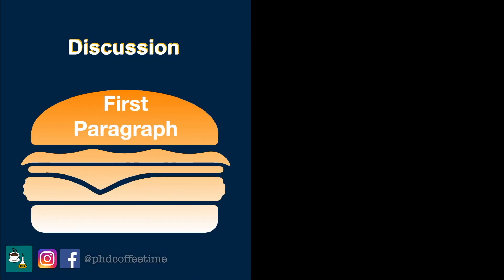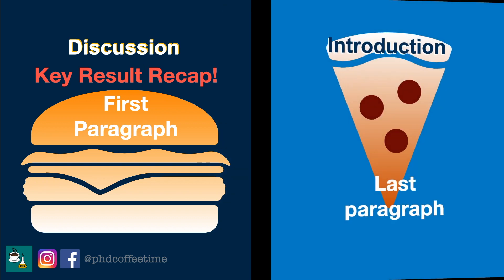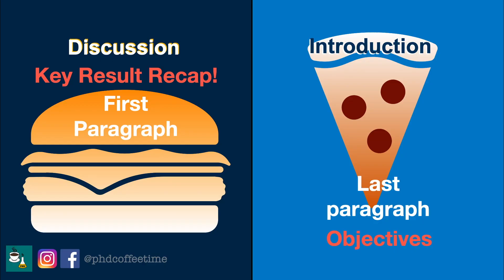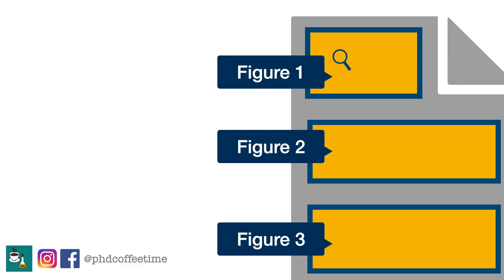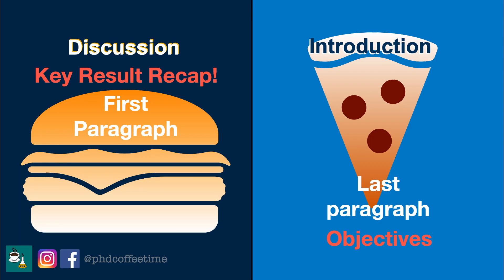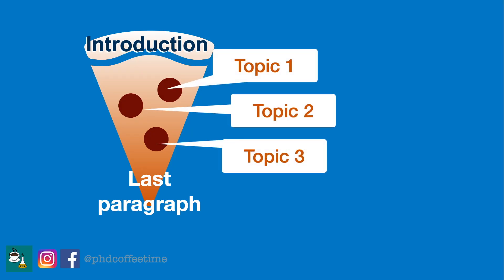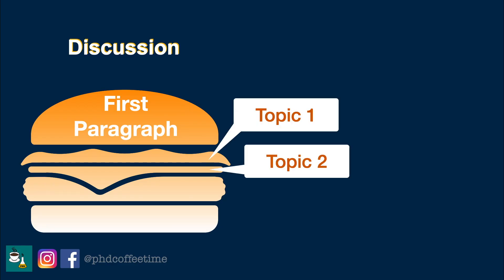The two things you will write right after you have the results would be the first paragraph of your discussion and the last paragraph of your introduction. The last paragraph of your introduction always defines the scope and objective of the paper you are writing, and this can be done right after you have the final list of figures. The first paragraph of the discussion usually reiterates what has been discovered — that's why it hinges on your list of figures and all your discoveries.